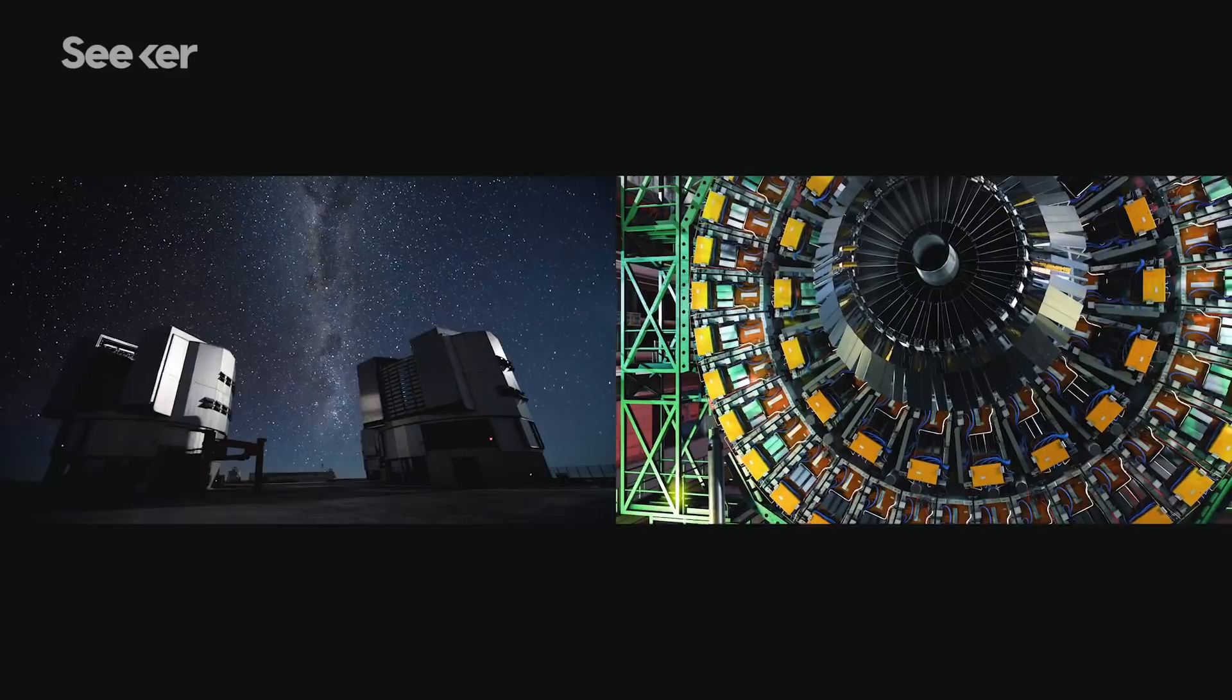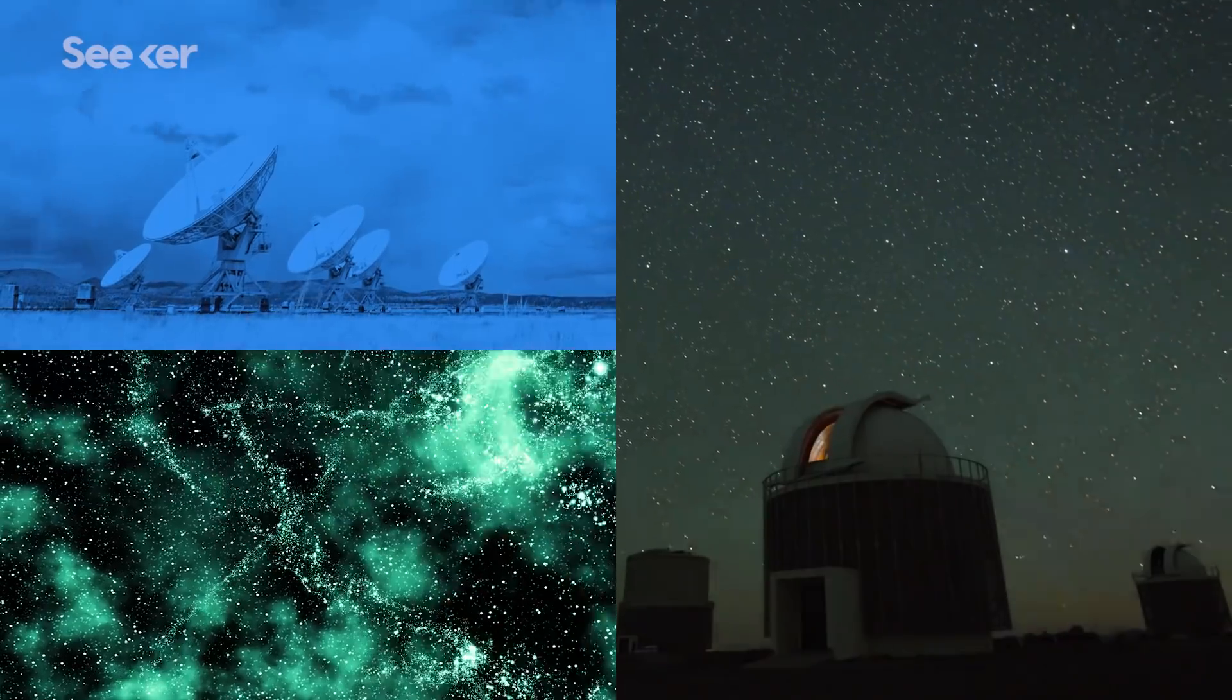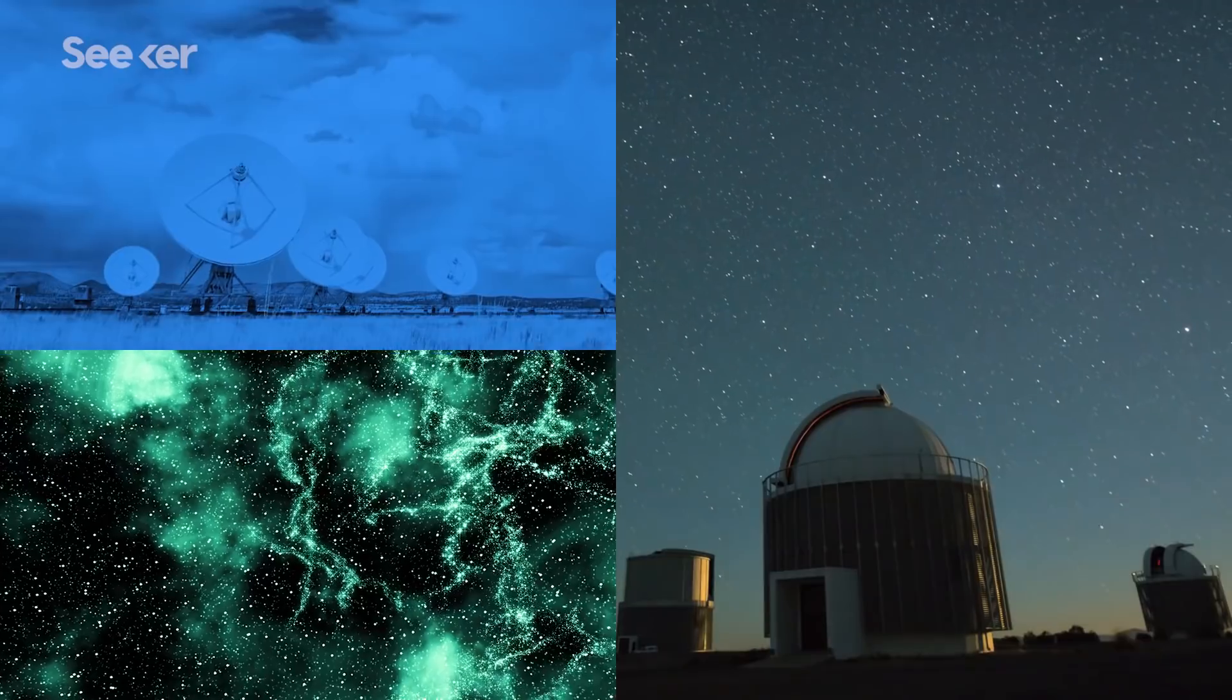So basically putting it all together, dark matter is the simplest explanation we have that explains all of the data that we have from different types of observations.